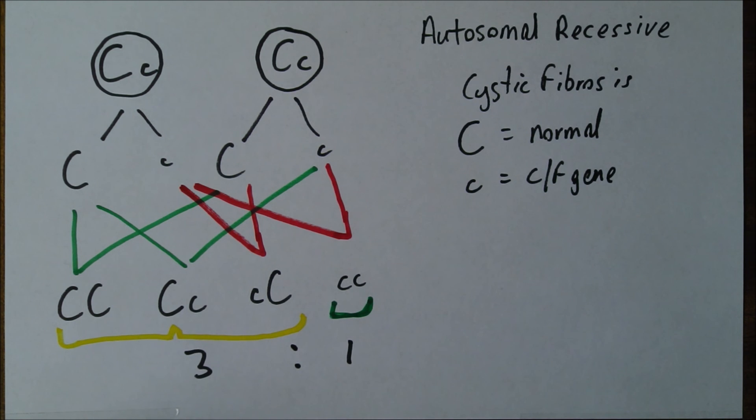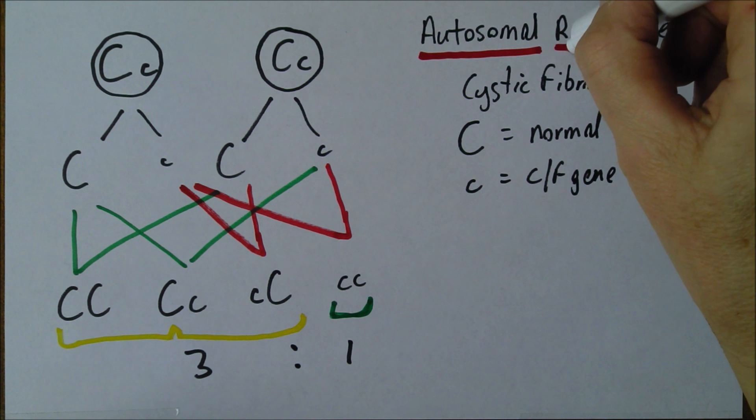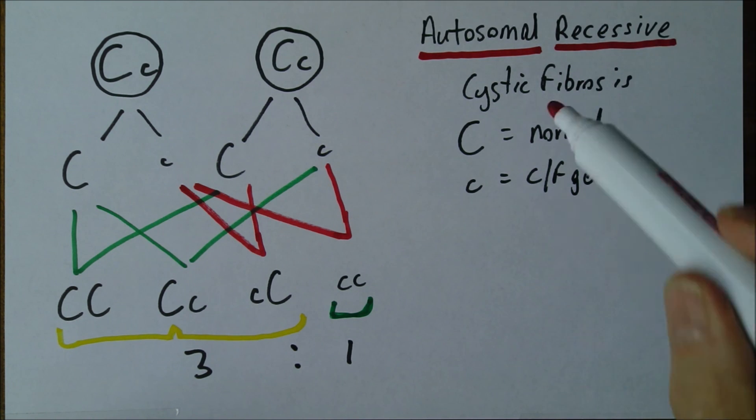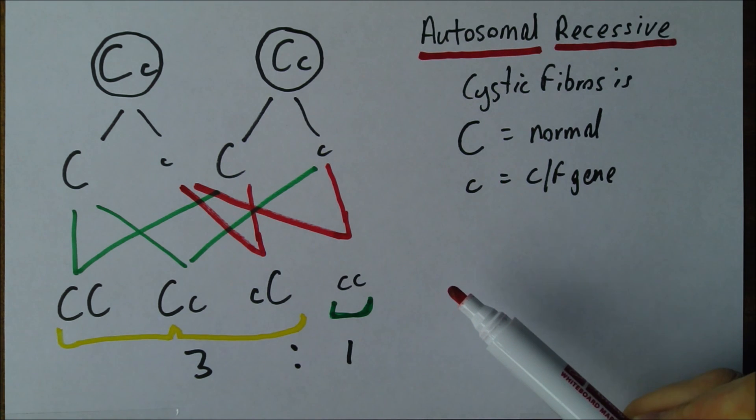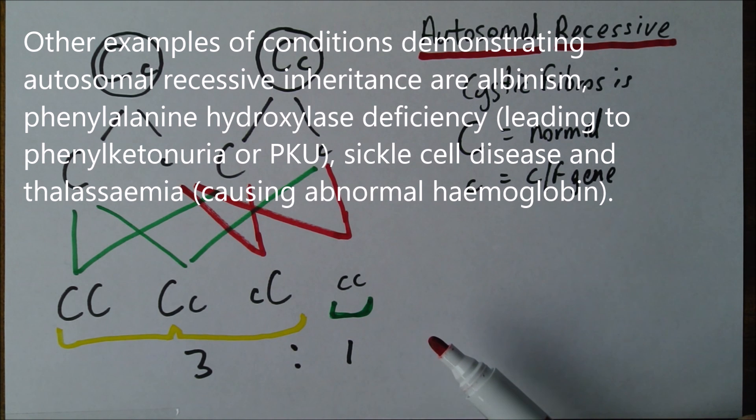This is what we find with autosomal recessive disorders - the 3:1 ratio. A 1 in 4 chance any particular child would be affected, assuming both parents are heterozygous for the recessive pathological gene.